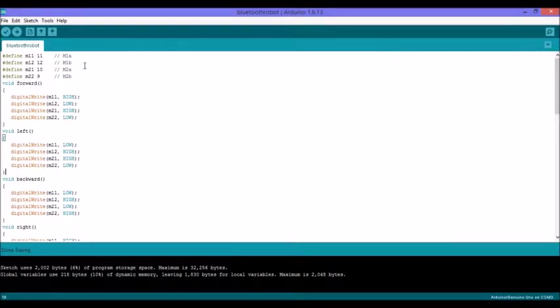The Arduino code for this type of robot is quite simple. First, you need to define the pins. Here, m11 pin is defined as pin 11 where we will connect the M1A pin of the motor driver, and so on.